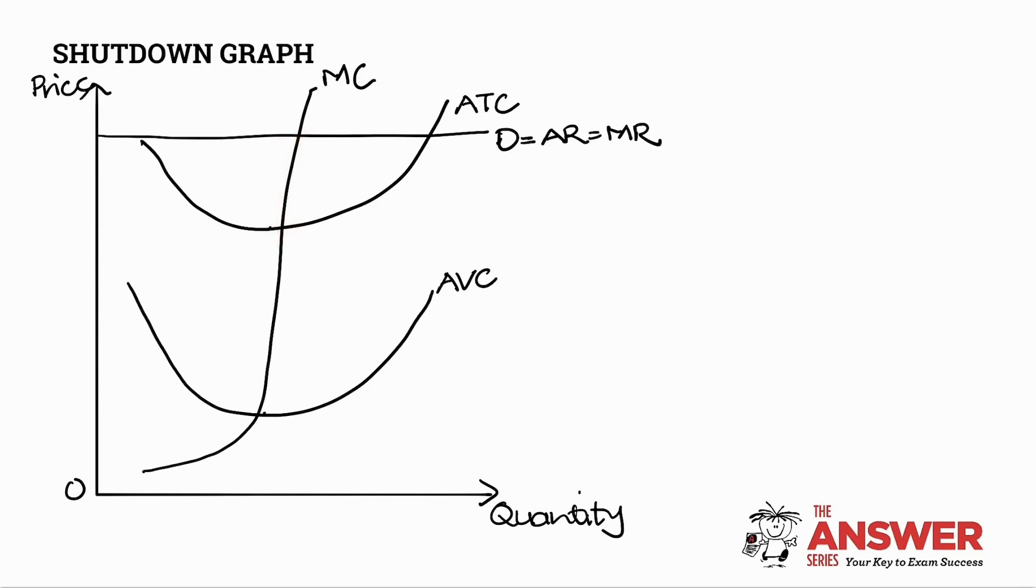When our average cost curve is equal to our average revenue, in other words at this point here, that's when we've earned a normal profit. So at this point here Grade 12s that's when our normal profit situation occurs. We also know that when our average costs exceed our average revenue that's when the firm has incurred an economic loss. So we can fill that in as well.